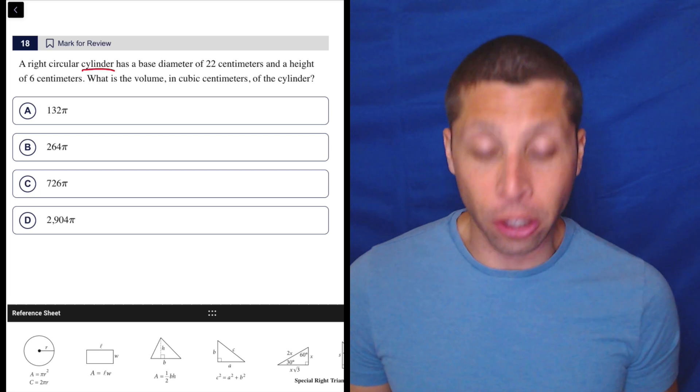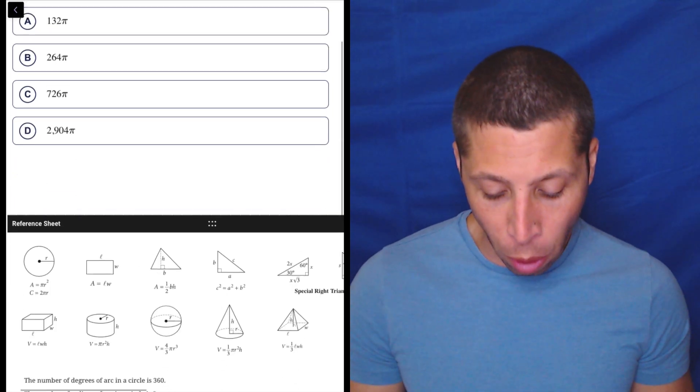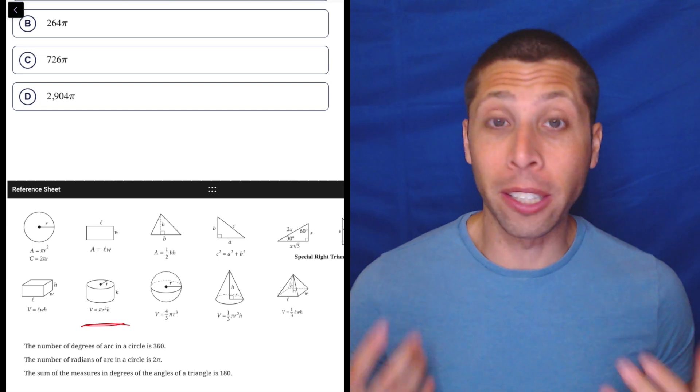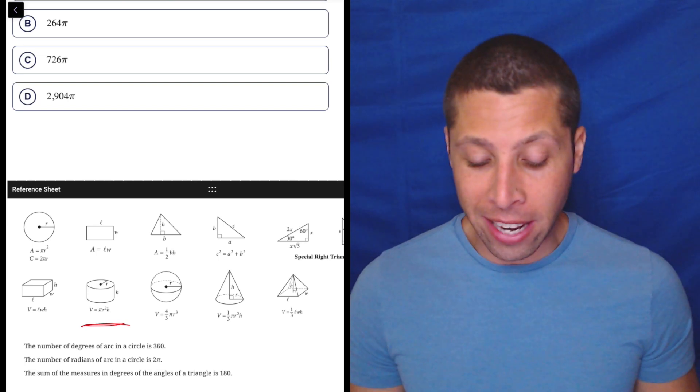You do need to know what a cylinder looks like, but if you do, when you open that reference chart, it's right there. They give you the formula. There's no real memorization that needs to happen here.